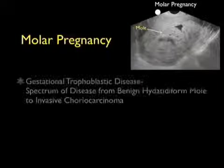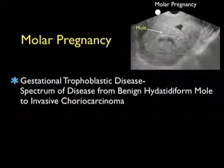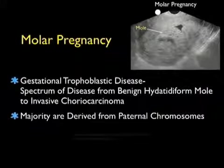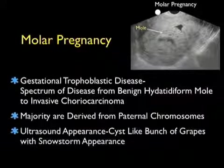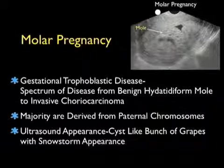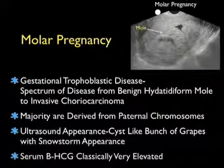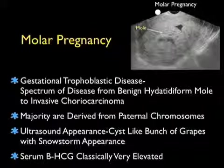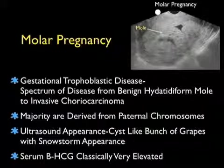I'd like to conclude this module with another form of abnormal pregnancy — a molar pregnancy, which is a form of gestational trophoblastic disease. Gestational trophoblastic disease ranges from a spectrum of benign hydatidiform mole to invasive choriocarcinoma, a form of metastatic disease. The majority are derived from paternal chromosomes with no maternal chromosomes in the embryo. The ultrasound appearance will be a cyst-like bunch of grapes with a snowstorm-type appearance, and classically the serum beta-HCG will be very elevated.